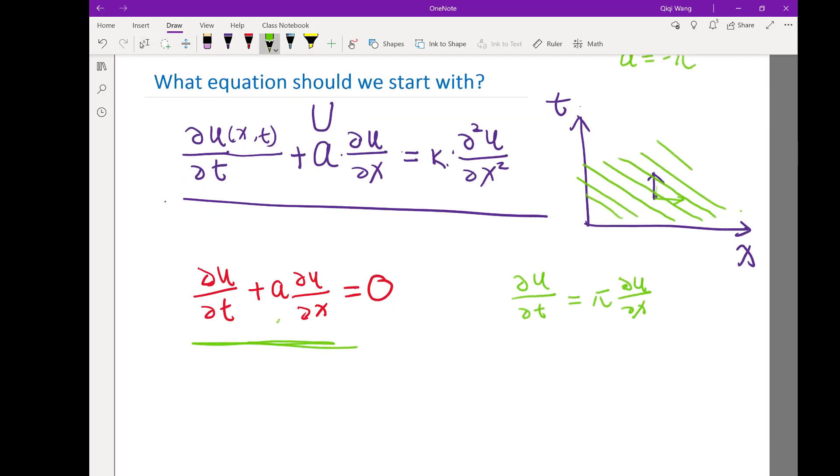I can prove analytically: if I have a function like that, the solution u(x,t) is some function of only a variable in this direction—a linear combination of x and t. The solution doesn't depend on whether you're here or here; it only depends on which contour you are on.